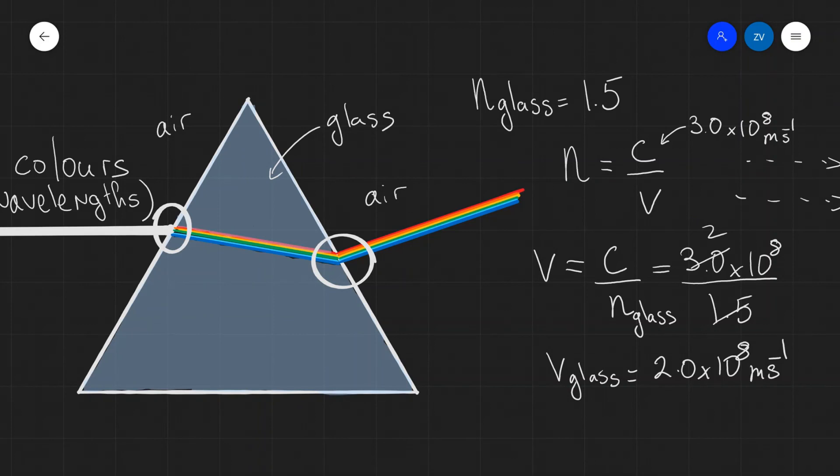In our next video, we are going to explain why different wavelengths, i.e. different colors, appear to split when they pass through this prism over here and form a continuous spectrum, also known as a rainbow. Join us for the next video. If there are any questions, feel free to drop a comment and thank you very much for watching.